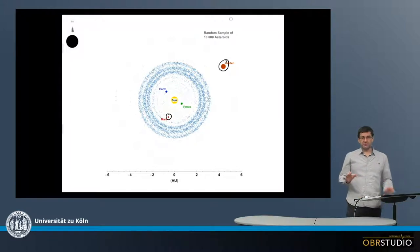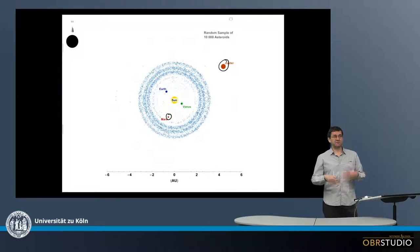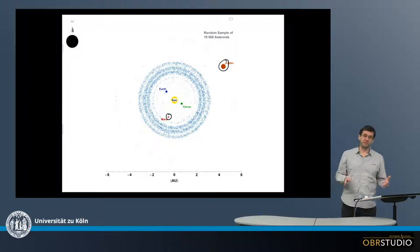This is a random sample of 10,000 asteroid orbits. In total, there are more than 500,000 known asteroids, and there might be more than a million.